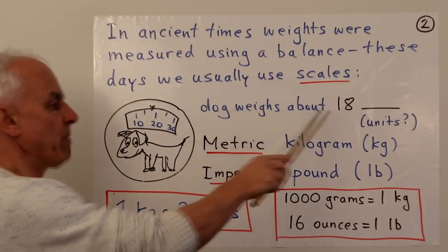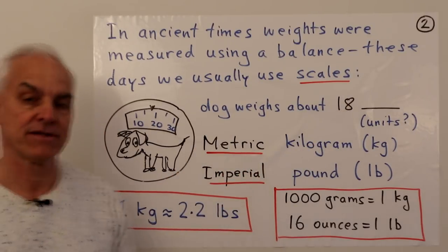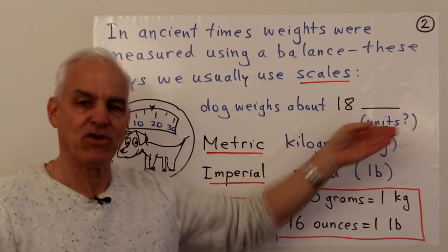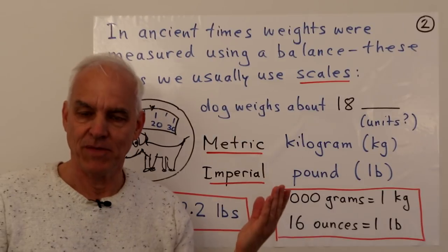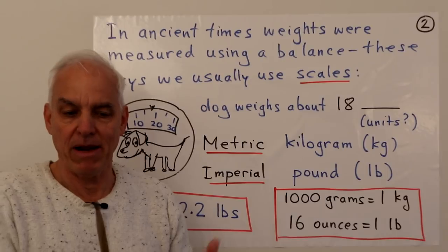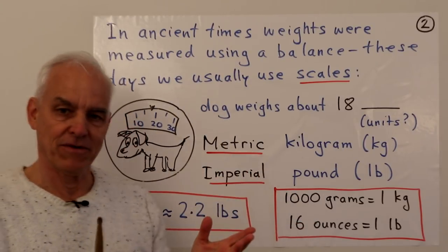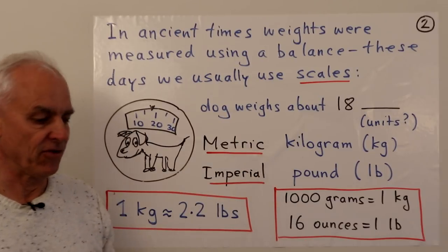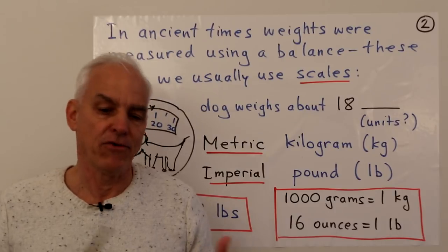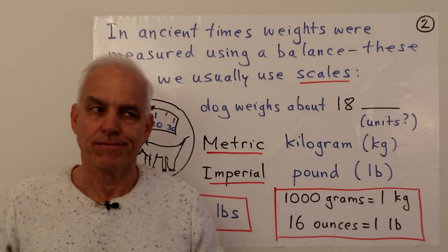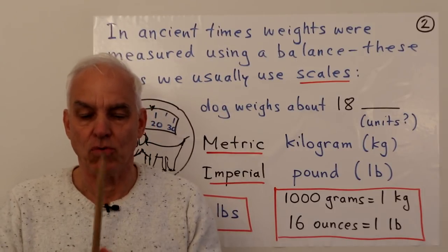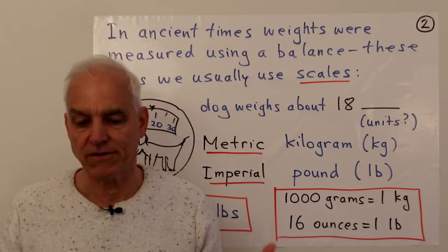So the dog weighs about 18 — but 18 what? There's a system of units implied here. Over the centuries and millennia, there have been hundreds of different measurement systems, scales, and units to measure weight throughout different cultures and periods.